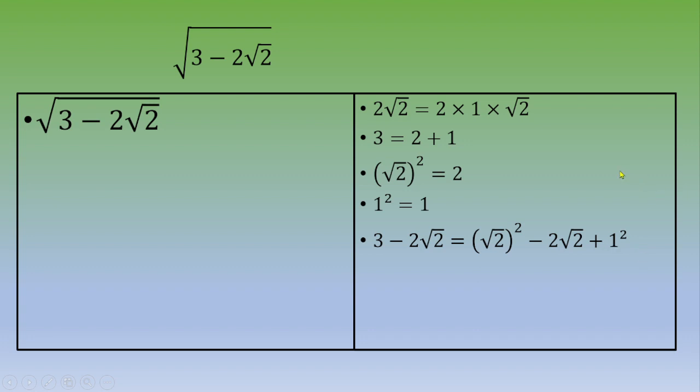Now if you apply this remarkable identity, you end up with 3 minus 2 square root of 2 equals square root of 2 minus 1 squared. Now you plug this quantity into the original square root. So you end up with square root of square root of 2 minus 1 squared.